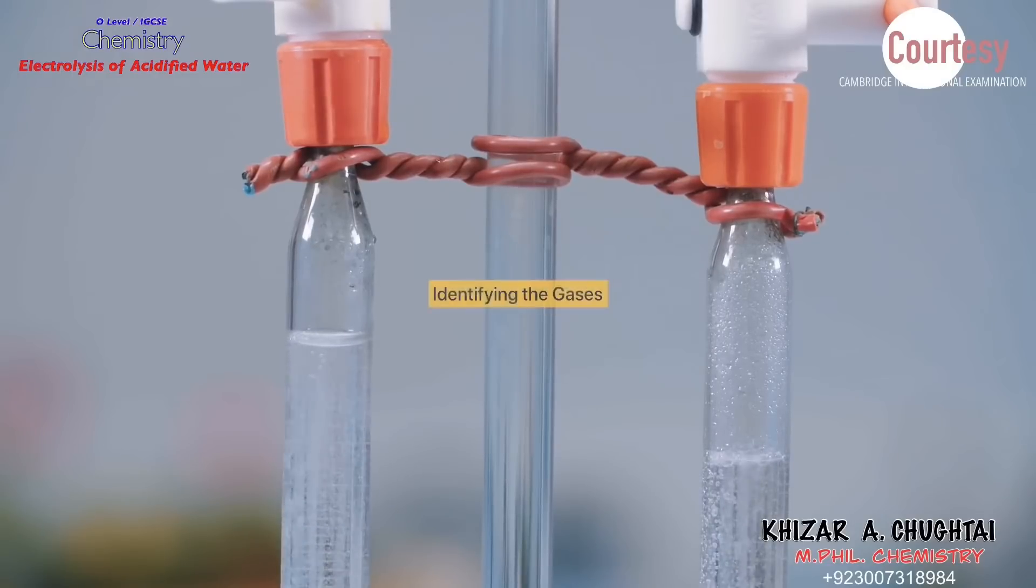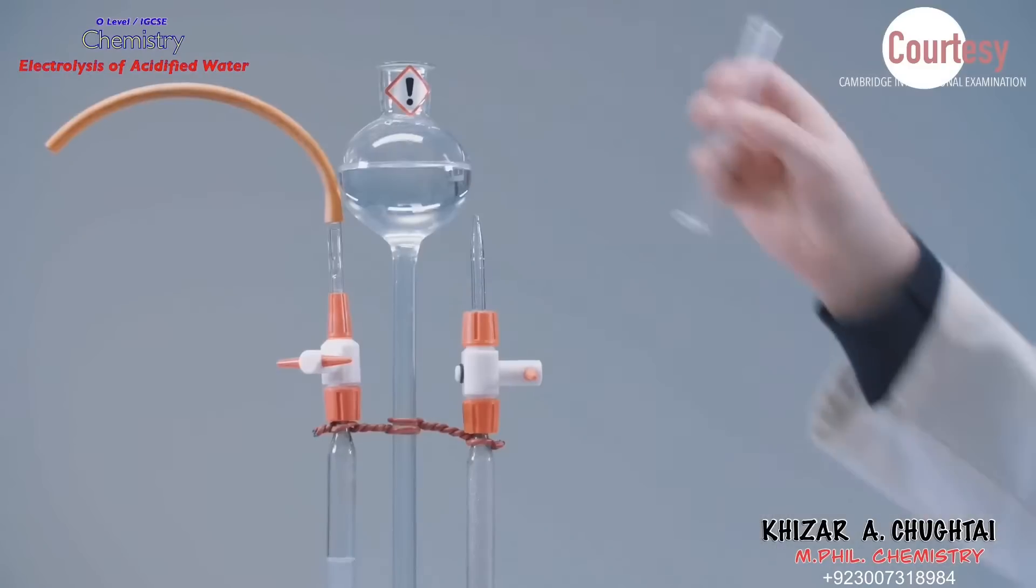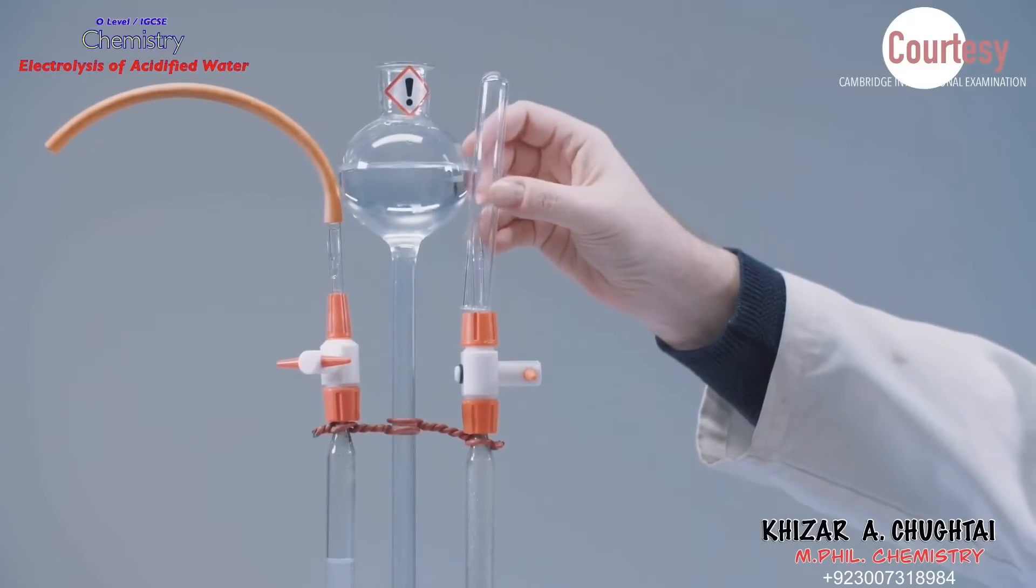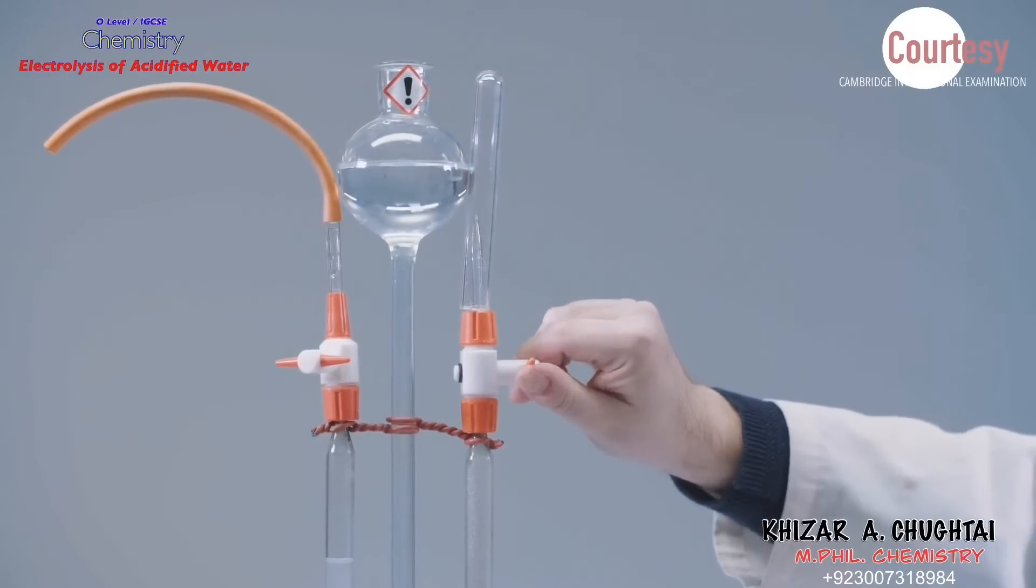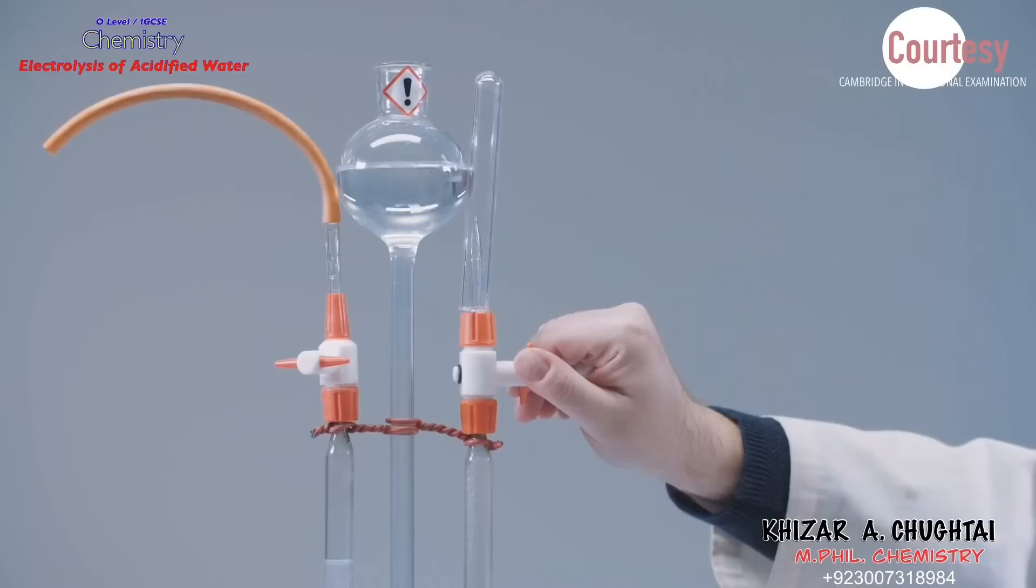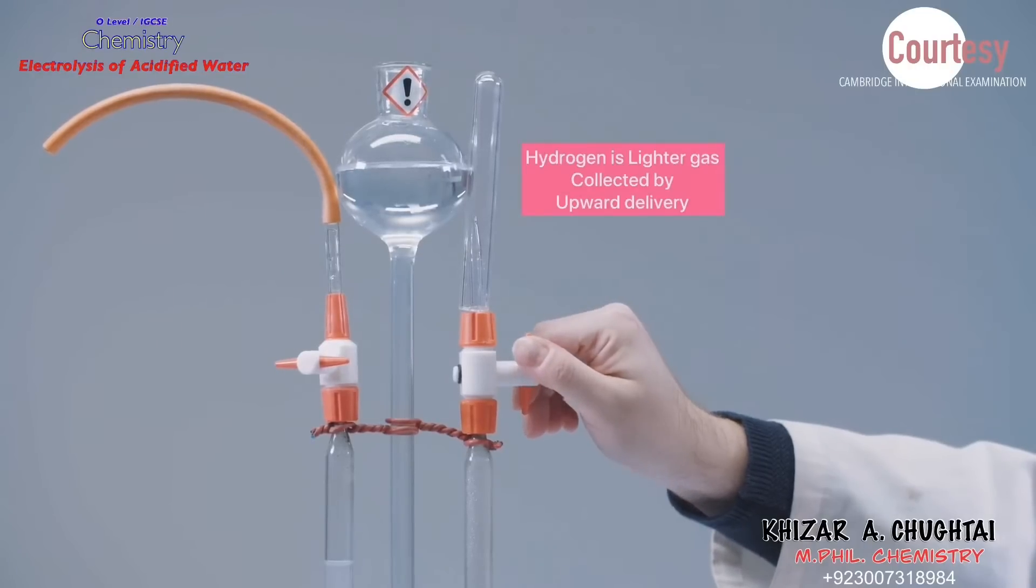The identities of the gases can be confirmed using the qualitative test for hydrogen and oxygen. First place an inverted test tube over the tap at the cathode, as hydrogen is a lighter gas. Tap is opened carefully to capture the hydrogen gas.